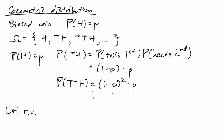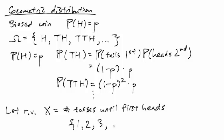We can phrase that in terms of a random variable. So let X be the number of tosses until we see the first heads. So the possible outcomes here are, of course, 1, 2, 3, and so forth, the set of positive integers.